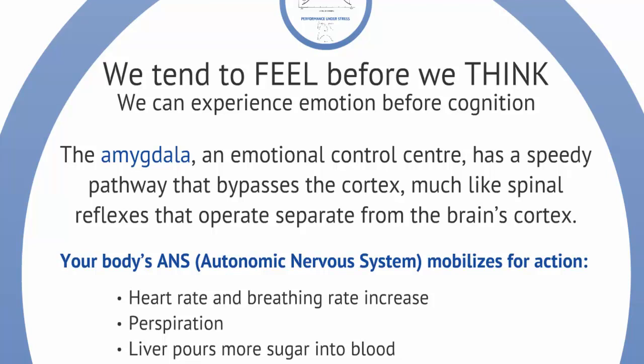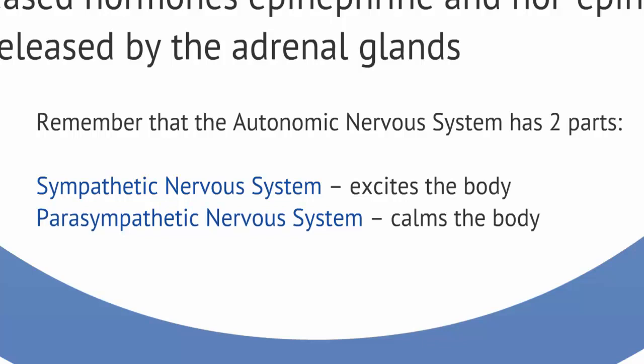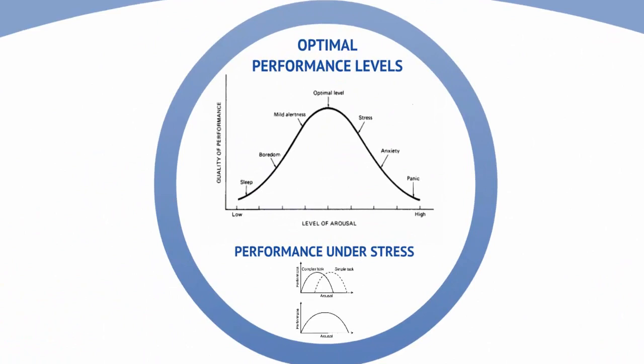Your body has an autonomic nervous system which mobilizes you for action. Your heart rate and breathing rate increase, you start to perspire, your liver pours more sugar into your blood, your pupils let in more light, your blood clots more quickly, and you have hormones like adrenaline rushing through your system. The autonomic nervous system has two parts: the sympathetic, which excites your body, and the parasympathetic, which calms your body.